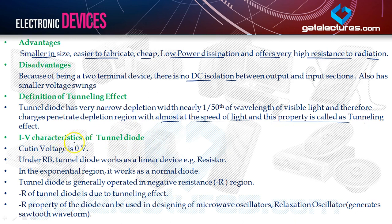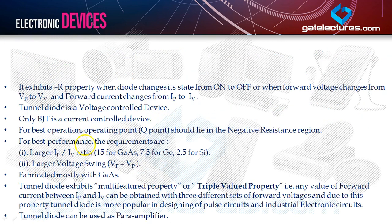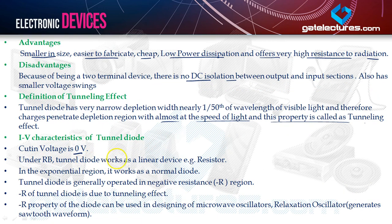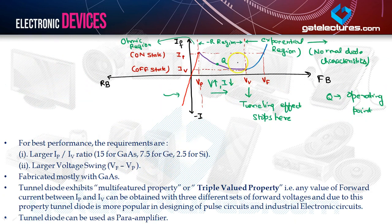The cutting voltage of the tunnel diode is 0 volts. Under reverse bias, the tunnel diode works as a linear device. The red line in the IV characteristics shows the ohmic region for voltages less than the peak voltage VP. In the voltage range VP to VV, the device enters a negative resistance region — the Q point or operating point is always kept within this range.